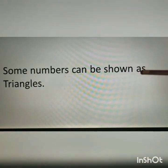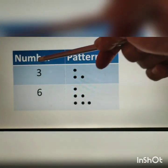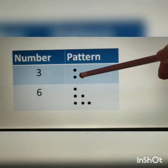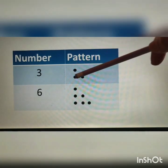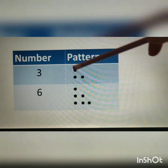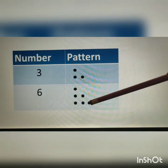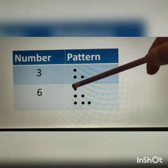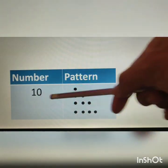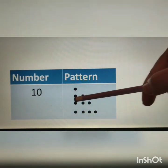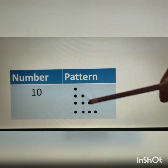Some numbers can be shown as triangles. For example, number 3: using 3 dots we can represent a triangle. In the next line, 6 dots are used to show the triangle pattern. Next, number 10: here 10 dots are used to form a triangle pattern.